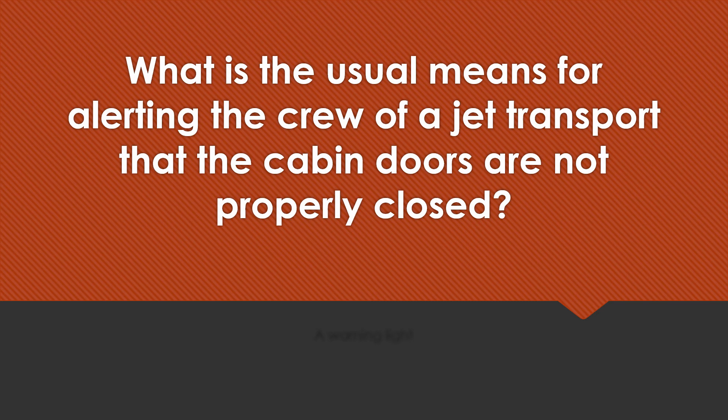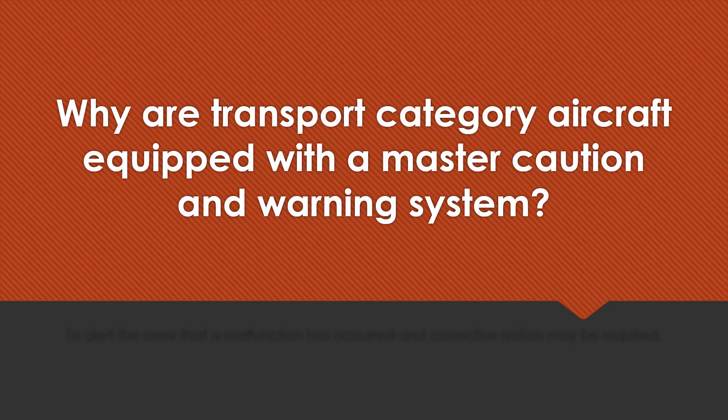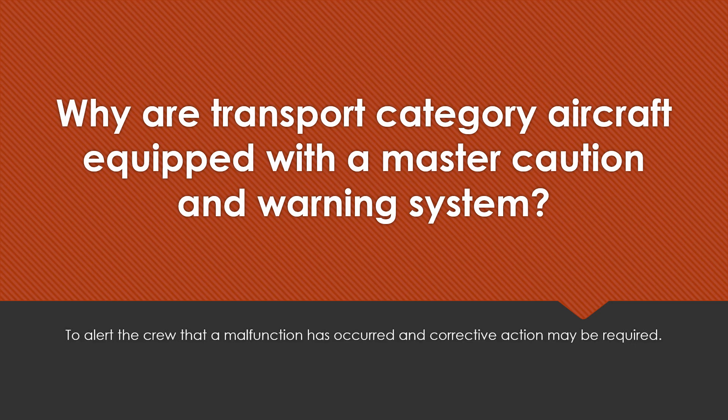What is the usual means for alerting the crew of a jet transport that the cabin doors are not properly closed? A warning light. Why are transport category aircraft equipped with a master caution and warning system? To alert the crew that a malfunction has occurred and corrective action may be required.